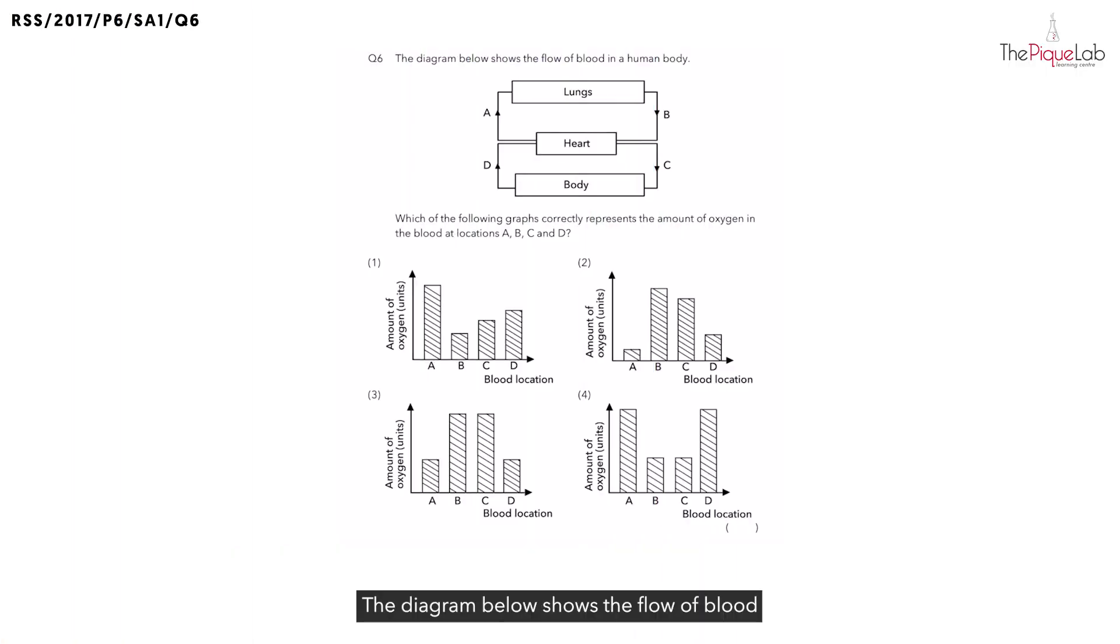Question 6. The diagram below shows the flow of blood in a human body and they ask which of the graphs below correctly represents the amount of oxygen in the blood at locations A, B, C and D. So before we take a look at the graphs, let's try and understand what happens to the amount of oxygen at the different locations.